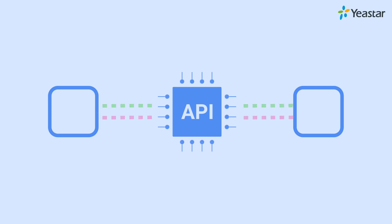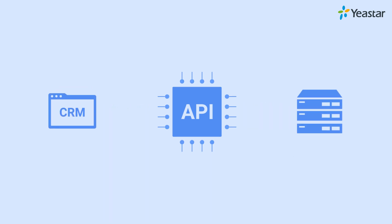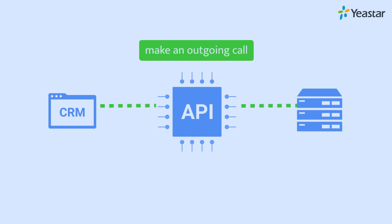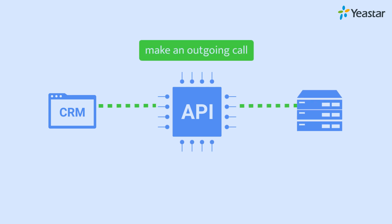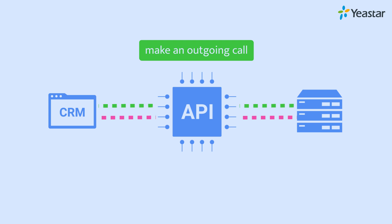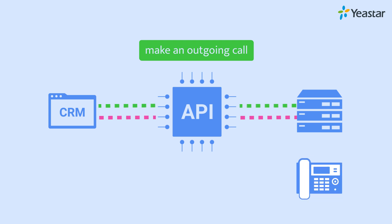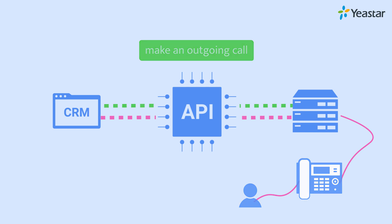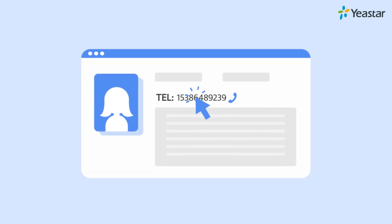In the scenario we've just mentioned, an API interface on the IP PBX takes requests from the CRM system, telling the IP PBX to make an outgoing call with an extension. The IP PBX receives the message, gives the feedback correspondingly, and sends the outgoing call. That's why we can use the phone system to make a call through the CRM.